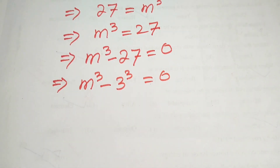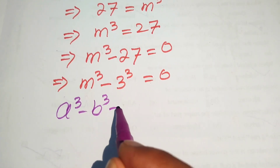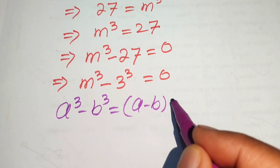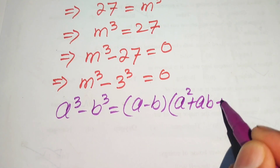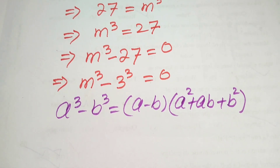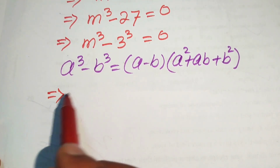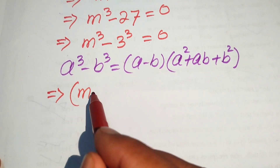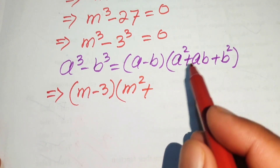Since 3 cubed equals 27, we apply the difference of cubes formula: a cubed minus b cubed equals a minus b, times a squared plus ab plus b squared. Using this formula on the left hand side, it is written as m minus 3, times m squared plus ab.